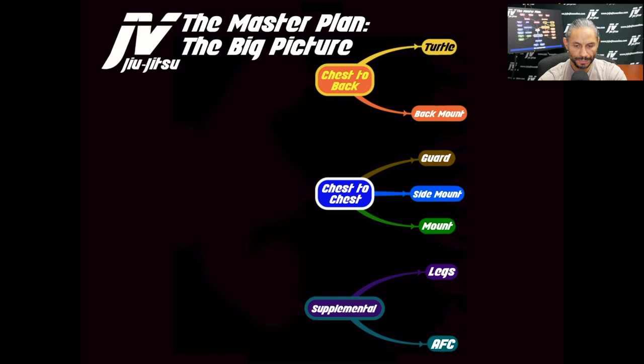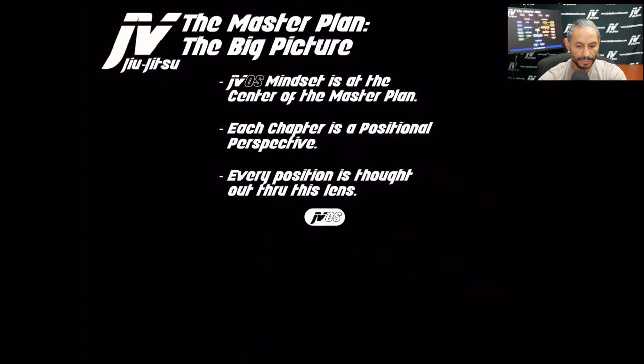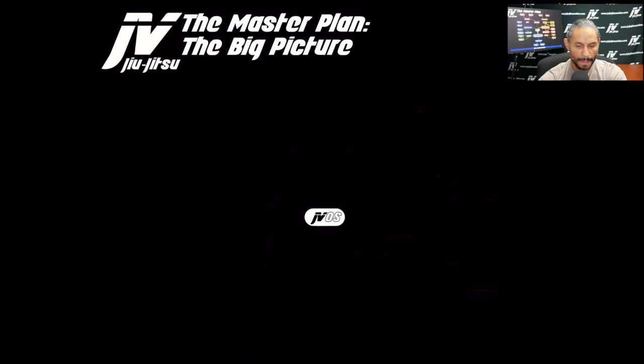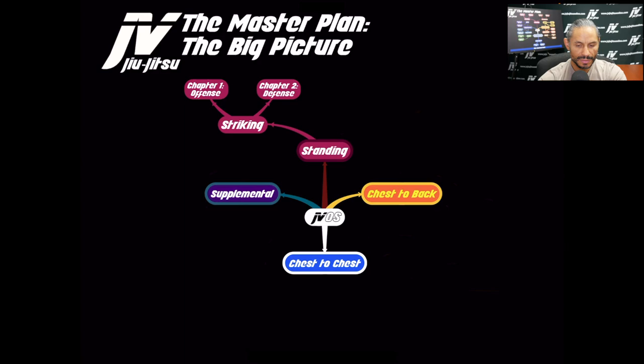JVOS is the Mindset at the center of the Master Plan. Each chapter is a Positional Perspective, and each position is viewed through this lens — Standing, Chest-to-Back, Chest-to-Chest, and Supplemental. Standing covers Striking Offense and Defense, and Takedowns Offense and Defense.